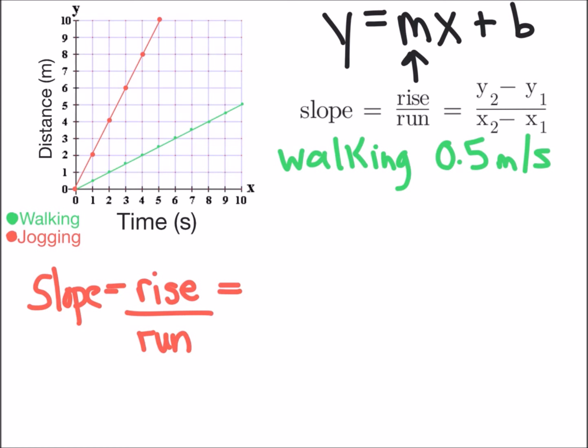For jogging the rise is 10 meters and we're going to divide that by the run which is 5 seconds.